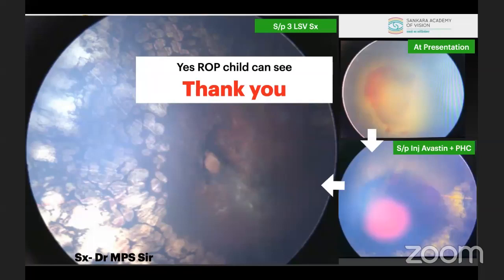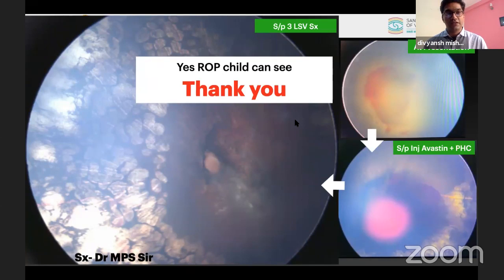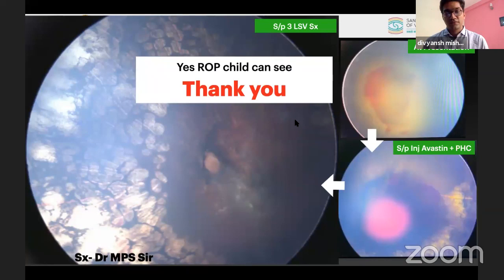A question from Dr. Anupama: she instills 1:1 dilution tropicamide-only drops just once and the pupil dilates well. Response: a single drop does work in most cases, but the constriction is also faster and the pupil may start constricting in less than half an hour. So if you have few children lined up and can examine quickly, a single drop is sufficient.